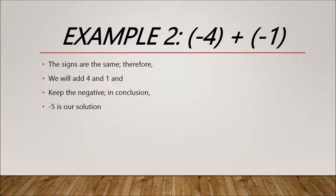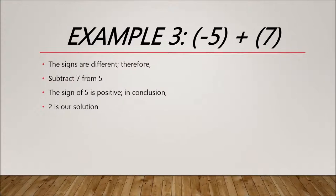Example 3: -5 + 7. The signs are different, so we subtract 7 from 5. The sign of 5 is positive; in conclusion, 2 is our solution.